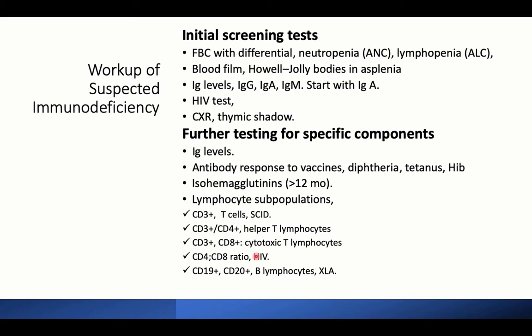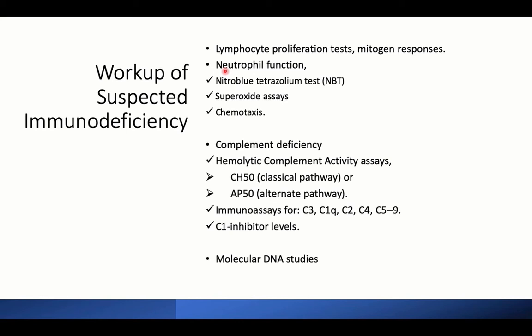If cell numbers are all normal, test for functional abnormalities using lymphocyte proliferation testing with mitogen responses. Test neutrophil function if the clinical situation suggests phagocyte disorder, including nitroblue tetrazolium test, superoxide assays, and chemotaxis testing. For complement deficiency, measure levels of C1, C2, C3, C4, and C5, or perform total hemolytic complement activity assay using CH50 for the classical pathway or AP50 for the alternative pathway.